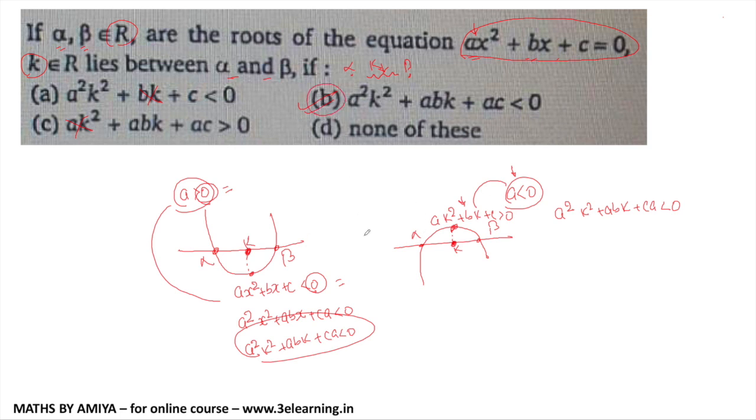The answer of this question is option number b. And with the help of graph, or we know, the sign of the function would change in between the roots. This is a logical and graphical aspect of this question. Answer of this question is nothing but option number b.